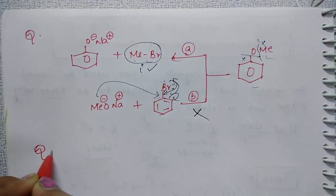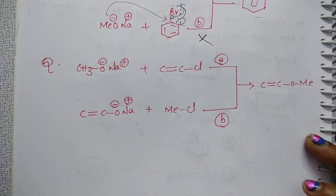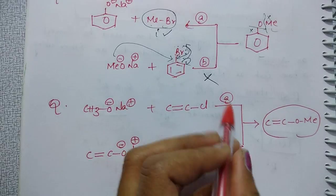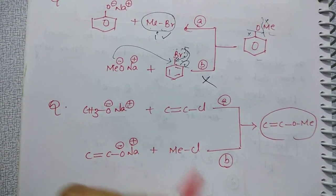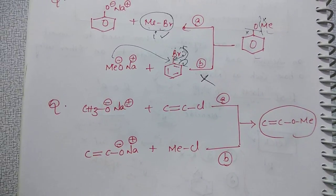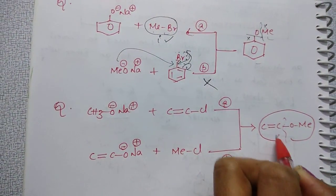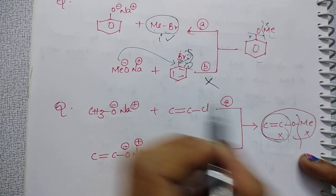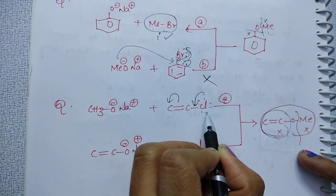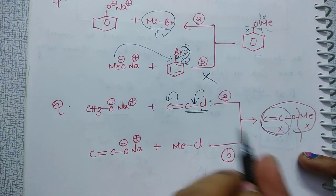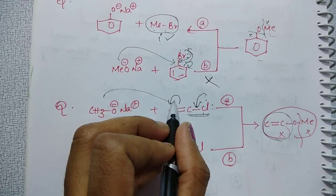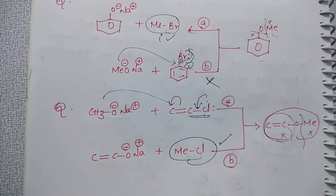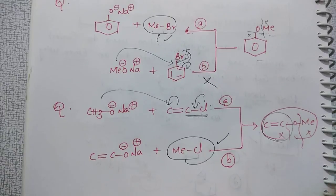See the next question: you want to prepare vinyl methyl ether. There are two routes — Route A and Route B. Identify the alkyl halide part in each. If the vinyl part is the alkyl halide, it involves resonance, and the C–X bond gets partial double bond character, so the halogen cannot leave as a good leaving group. Therefore Route B gives a better yield compared to Route A.